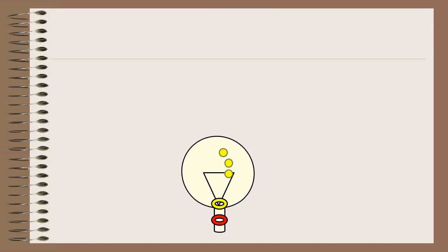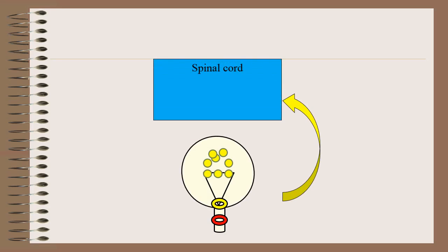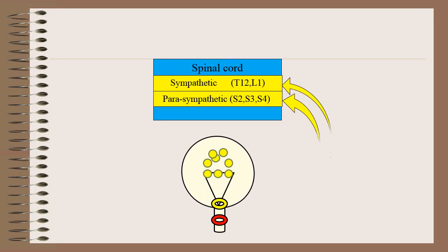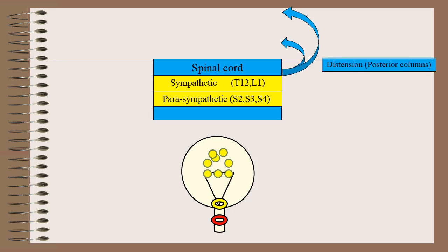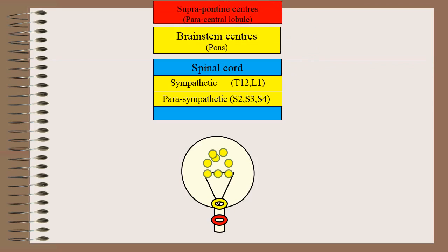Once urine starts getting accumulated in the bladder, the sense of distension is carried to the spinal cord, mainly by parasympathetic and partly by sympathetic sensory nerves. From the spinal cord, the sense of distension travels through posterior columns and reaches brainstem centers and suprapontine centers.